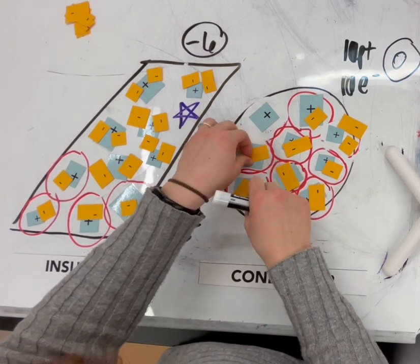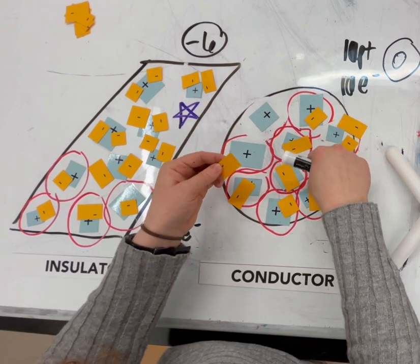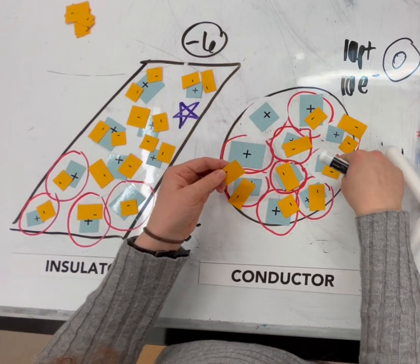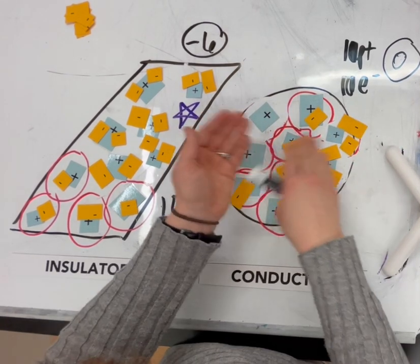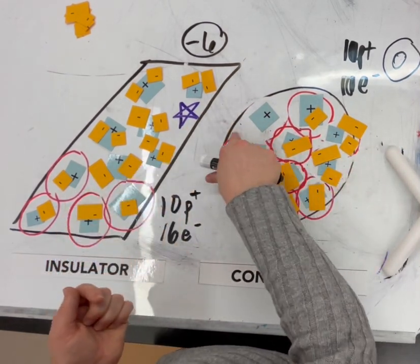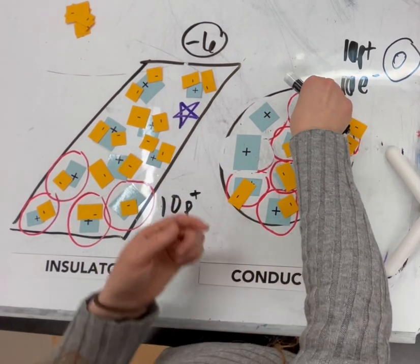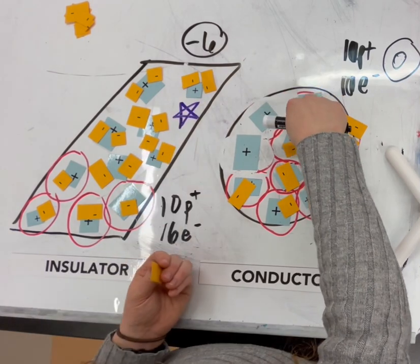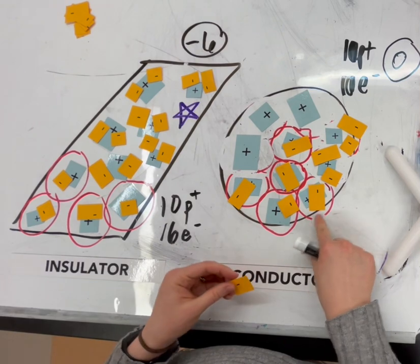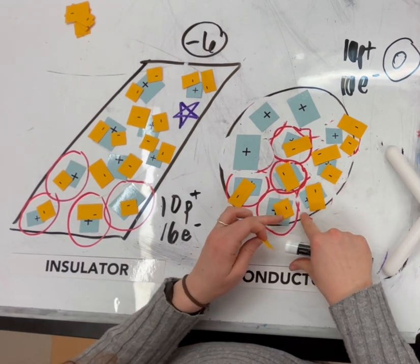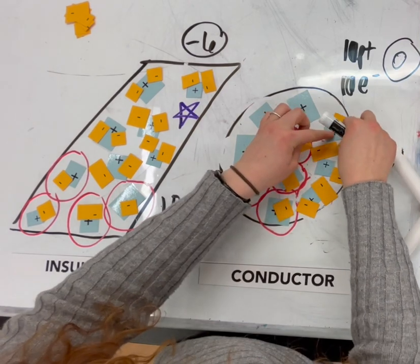And so this electron definitely doesn't want to be close to the charge either. And so this one does the same thing, where it's going to move and attach to an atom on the right side of the pithball, leaving behind an exposed proton. And maybe this one does too. This one is going to leave and attach to the other side of the pithball.